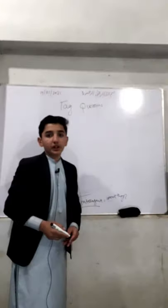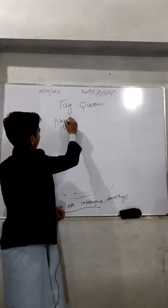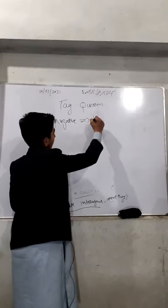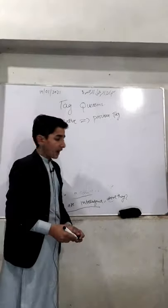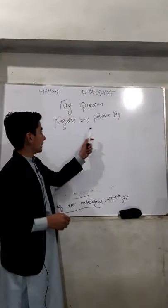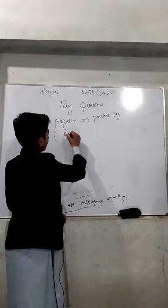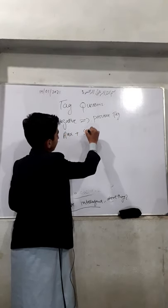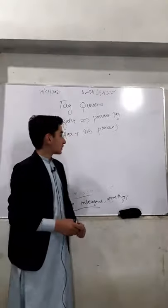The second structure is: whenever we have negative sentences, we should use a positive tag. So when we have a negative sentence, we should use a positive tag. The structure of the positive tag is: auxiliary plus subject pronoun — without 'not'.